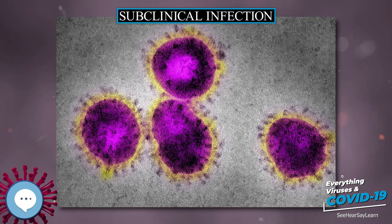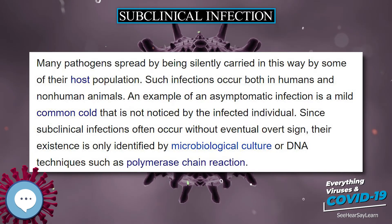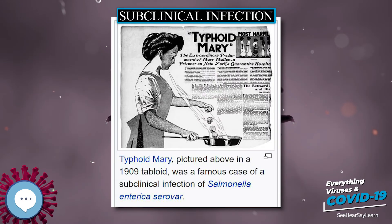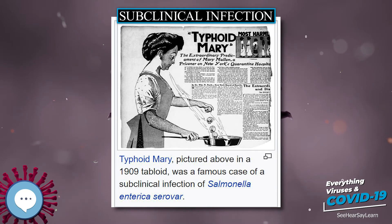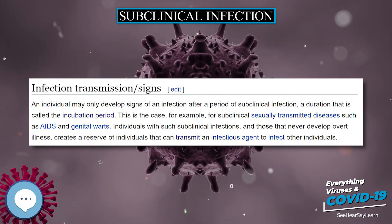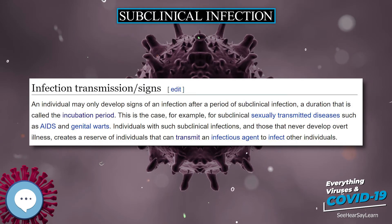An individual may only develop signs of an infection after a period of subclinical infection, a duration that is called the incubation period. This is the case, for example, for subclinical sexually transmitted diseases such as AIDS and genital warts.